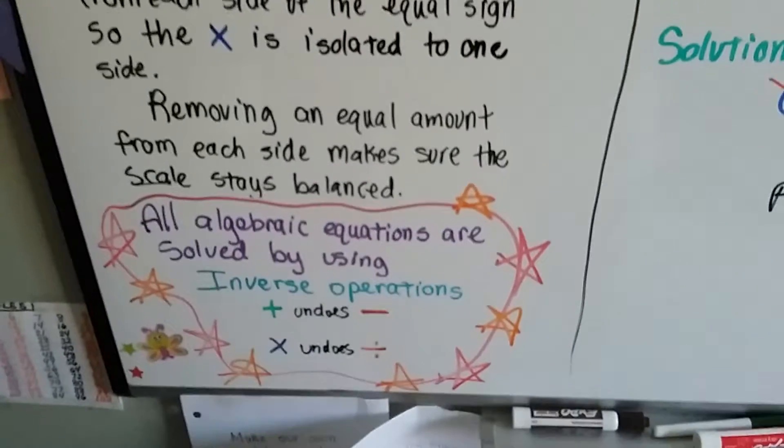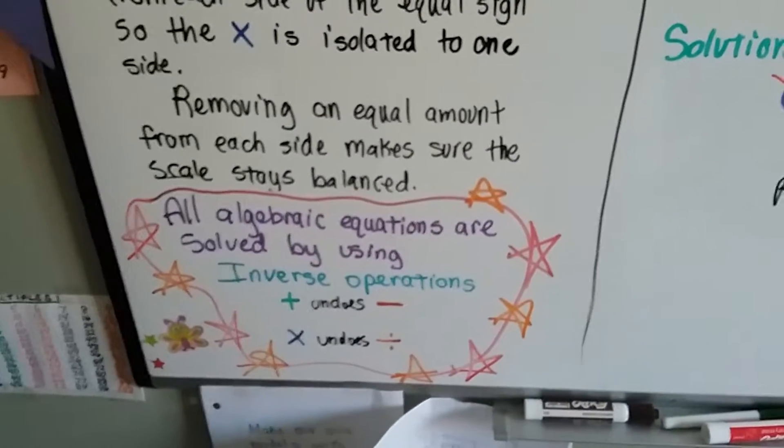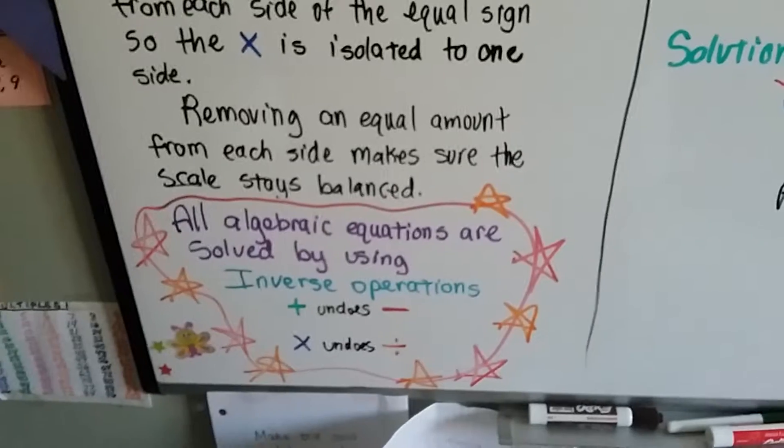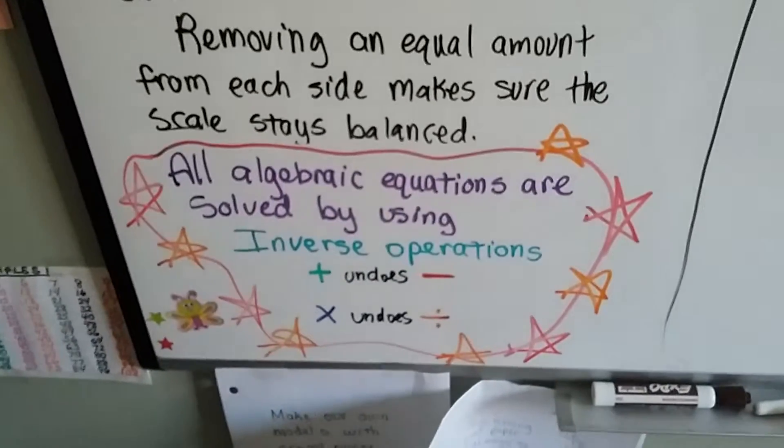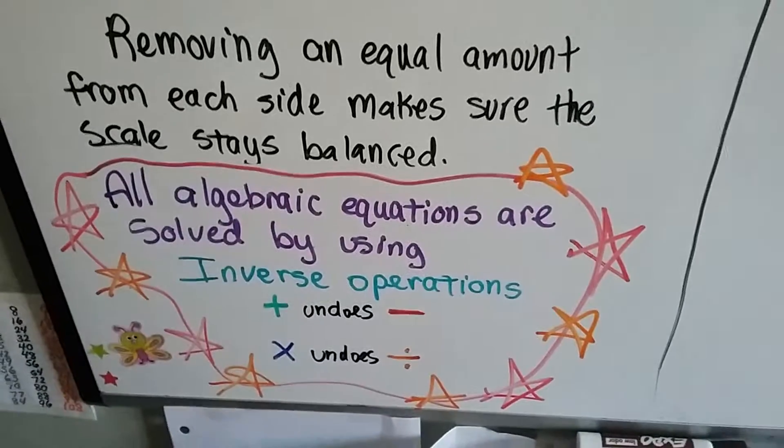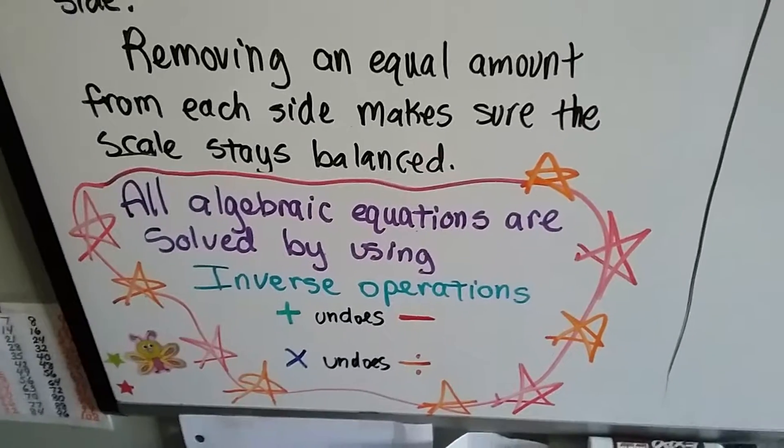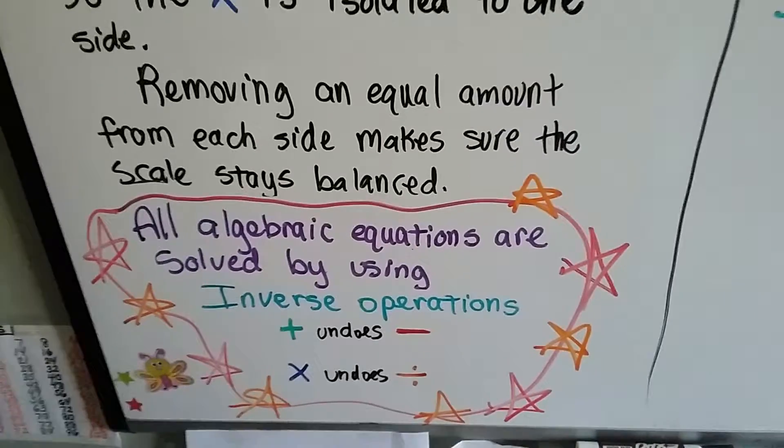So all algebraic equations are solved by using inverse operations. That's what we're doing. The opposite of addition is subtraction. And if you want to undo subtraction, you use addition. And the opposite of multiplication is division, and if you want to undo division, you use multiplication. They're the inverse.